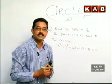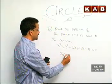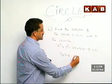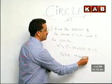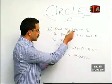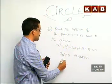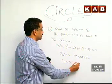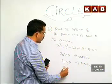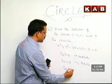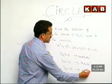What is the concept here? Simply, if S1,1 is greater than 0, the point is outside. S1,1 means putting the point in the given curve. If S1,1 is less than 0, the point is inside. And if S1,1 equals 0, the point is satisfying the equation — it is on the circle. This is the concept.